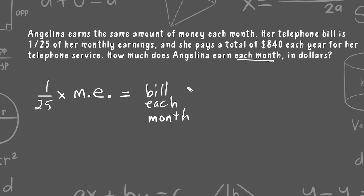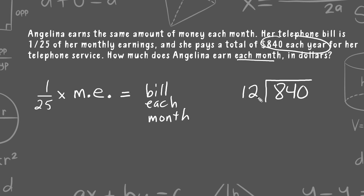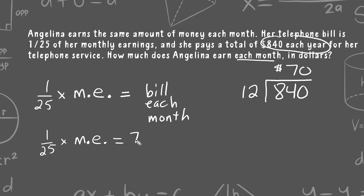They give us her yearly bill, but we can easily take that total and divide it equally into twelve months to figure out her monthly bill. Eight hundred forty divided by twelve is exactly seventy, because twelve fits into eighty-four seven times, and then we place a zero. So we can now say that one twenty-fifth times her monthly earnings is equal to seventy dollars.